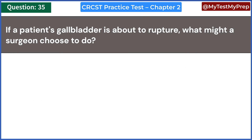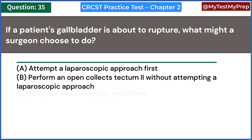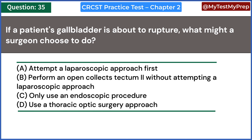If a patient's gallbladder is about to rupture, what might a surgeon choose to do? A. Attempt a laparoscopic approach first. B. Perform an open cholecystectomy without attempting a laparoscopic approach. C. Only use an endoscopic procedure. D. Use a thoracic optic surgery approach. Answer: B. Perform an open cholecystectomy without attempting a laparoscopic approach.